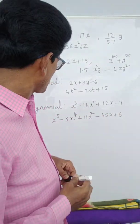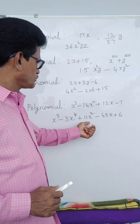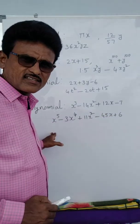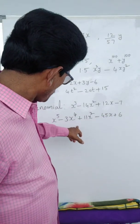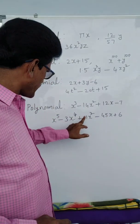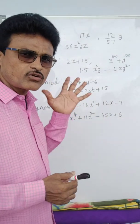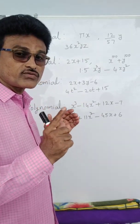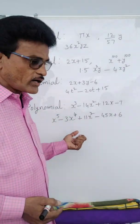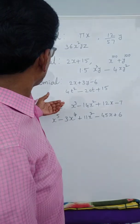For example: how many terms are there? — 1, 2, 3, 4, 5 terms. What is the degree of x³ in this? See — x⁰, x¹, x², x⁴, x⁵ are present but x³ term is not there. So simply say 0 times x³ — coefficient of x³ is 0. What is the coefficient of x? Minus 45. What is the constant term? That is 6.